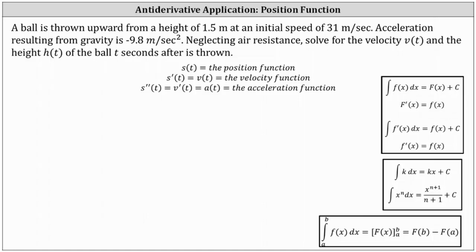Let's go back and list all the given information. If the ball is thrown upward from a height of 1.5 meters, the initial height is 1.5 meters, meaning h of zero is equal to 1.5. The initial speed is 31 meters per second, which means the initial velocity is 31 meters per second, so v of zero is equal to 31. We're also told the acceleration resulting from gravity is negative 9.8 meters per second squared, which means a of t, the acceleration function, is equal to negative 9.8. From this information, we want to determine the velocity function and the height function.